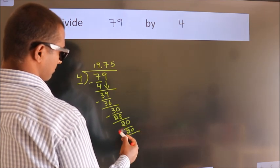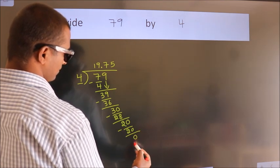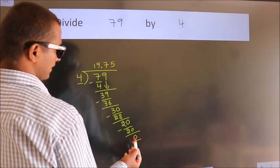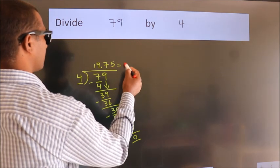Now we subtract and get 0. We got remainder 0, so this is our quotient.